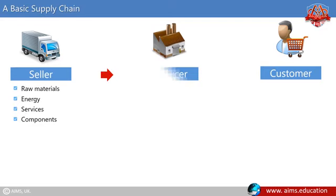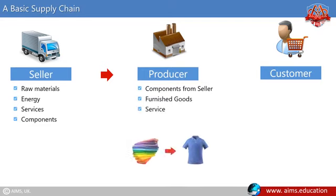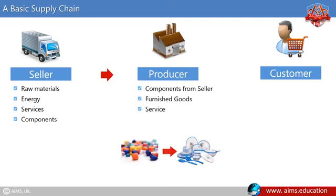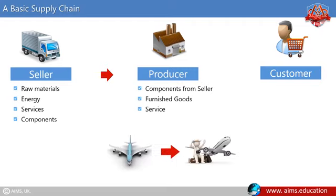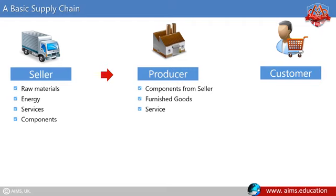A producer is the one who receives components from the seller to produce a finished good or service, such as shirts from fabric, crockery from plastic, power from electric wiring, or provides transportation through aircraft.